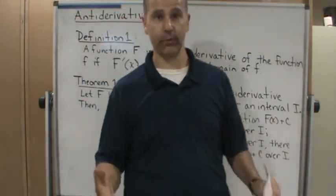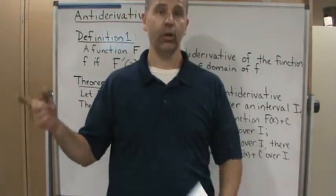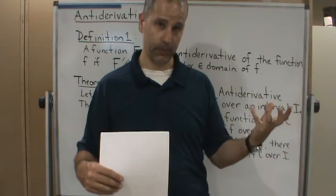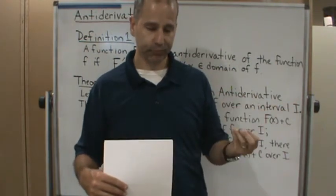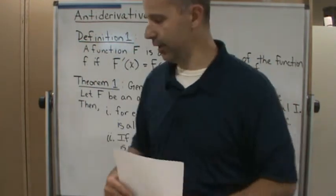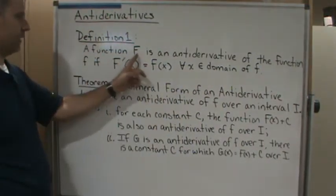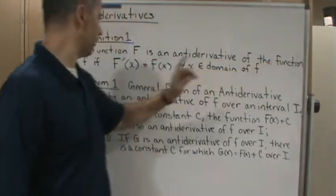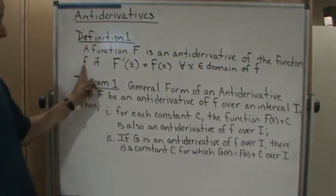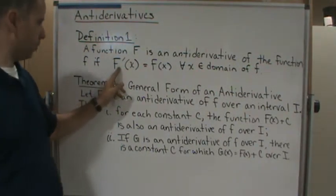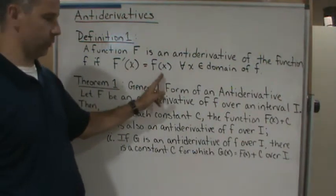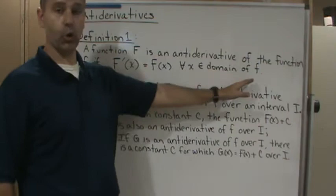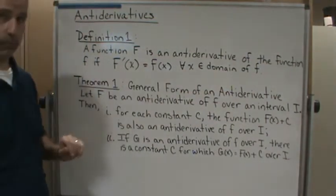When we find an antiderivative, we're looking for a function whose derivative gives us a particular function. So the definition of an antiderivative then is: a function capital F is an antiderivative of the function lowercase f if the derivative of capital F equals f(x) for all x in the domain of f.